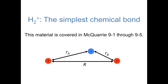Hi, everybody. So far in this course, we've built up from simple model systems to one-electron atoms to multi-electron atoms, and really the only thing left for us to do is to start talking about chemical bonds. In this video, we'll be focusing on the simplest chemical bond, H2+.